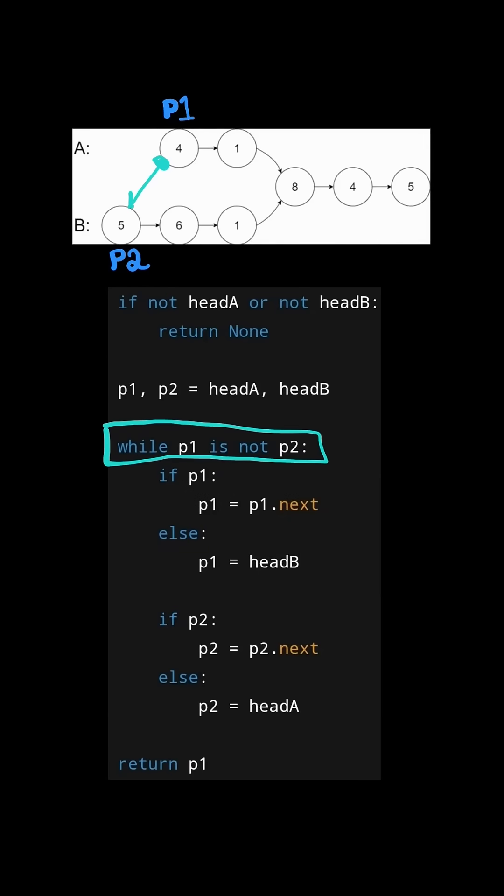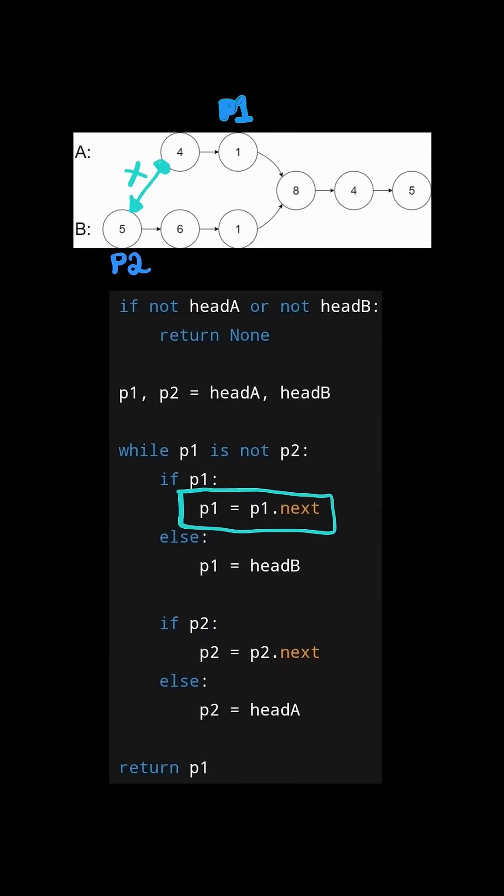And while the node P1 does not equal the node P2, we advance P1 and we advance P2. Now again the node P1 does not equal P2, so we advance P1 and we advance P2.